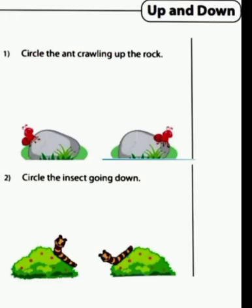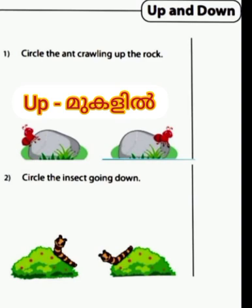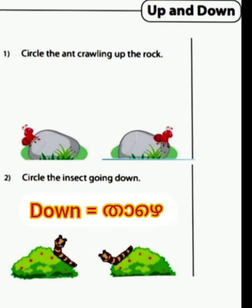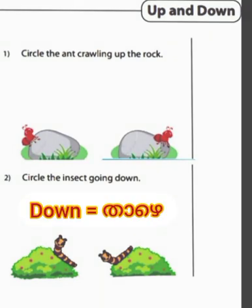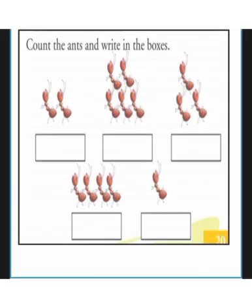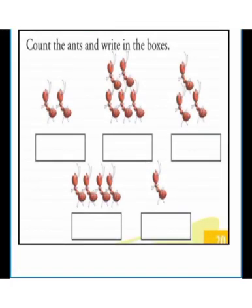Now we know the meaning of up and down. Look at the first picture — circle the ant crawling up the rock. In the second picture, circle the insect going down. Complete this activity in your textbook.